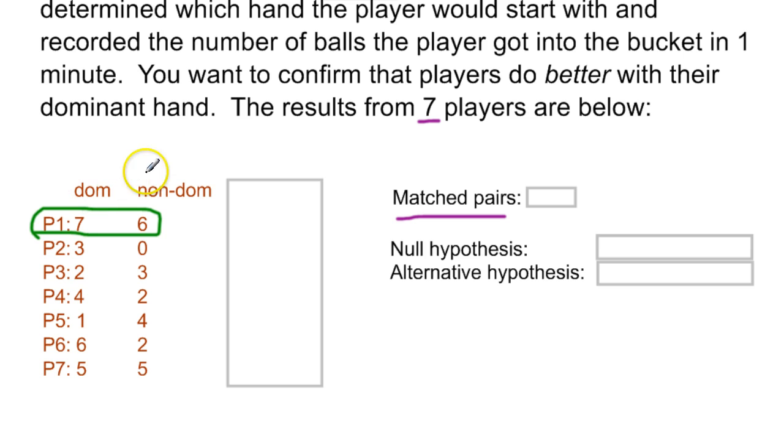So in this case, let's say we have dominant minus non-dominant. So dominant minus non-dominant, here we have a seven versus a six. And if we find the difference between them, we're going to get a difference of one. And so forth as we go.